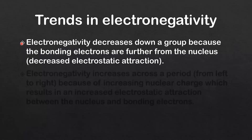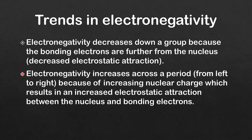Next we'll look at the reasons for those trends. Electronegativity decreases down a group because the bonding electrons are further from the nucleus, resulting in decreased electrostatic attraction. Electronegativity increases across a period from left to right because of increasing nuclear charge, which results in an increased electrostatic attraction between the nucleus and bonding electrons.